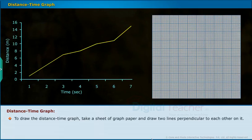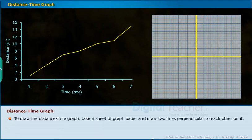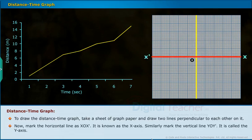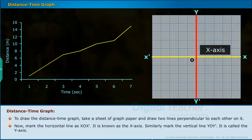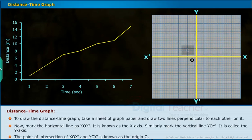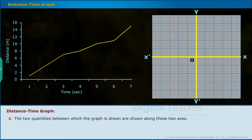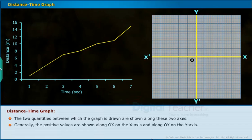To draw the distance-time graph, take a sheet of graph paper and draw two lines perpendicular to each other on it. Now, mark the horizontal line as XOX. It is known as the X axis. Similarly, mark the vertical line YOY. It is called the Y axis. The point of intersection of XOX and YOY is known as the origin O. The two quantities between which the graph is drawn are shown along these two axes. Generally, the positive values are shown along OX on the X axis and along OY on the Y axis.